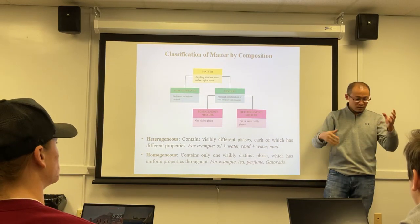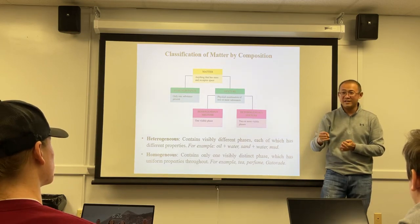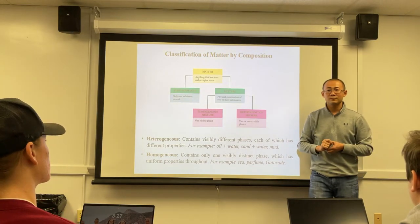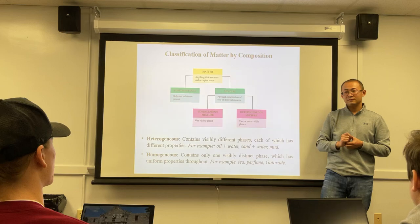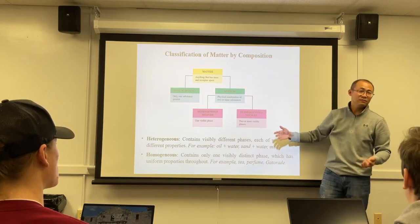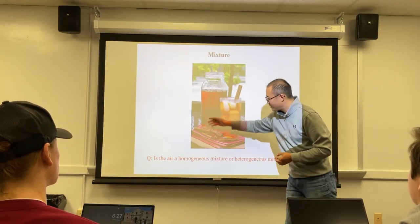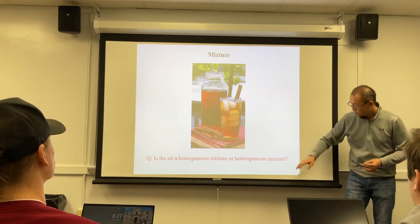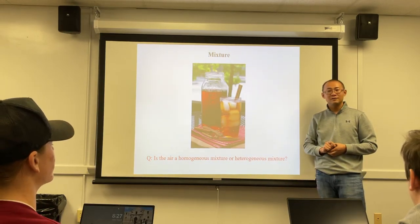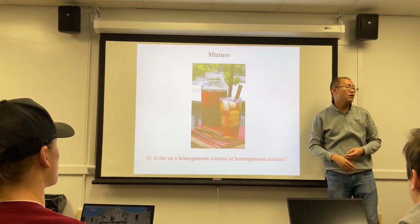Is soil a mixture? Yes, definitely — soil has rocks, worms, moisture in it. Is it homogeneous or heterogeneous? Heterogeneous, because you can usually see the different parts. If you cut a piece of soil, the top may be drier while the bottom is more moist. So soil is a heterogeneous mixture. Iced tea is homogeneous; iced tea with ice is heterogeneous. More importantly, the air we breathe — we know it's a mixture — is it homogeneous or heterogeneous? Homogeneous, because it's uniform. We don't see one piece of air denser than another; it's the same across the whole classroom.